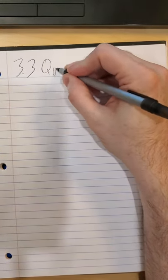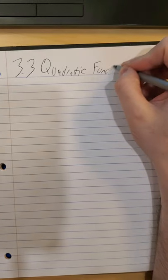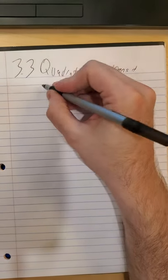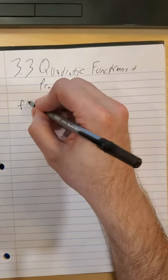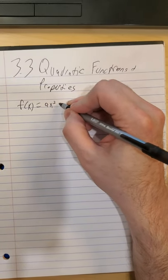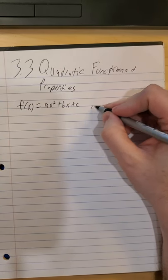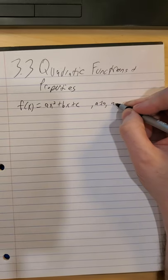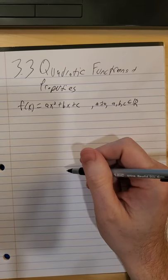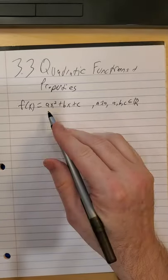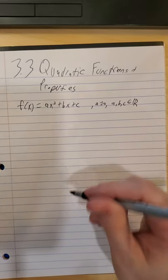Hello and welcome back. In 3.3 we get into quadratic functions and their properties. So first a basic setup for what a generic quadratic would look like: f(x) = ax² + bx + c. So a is non-zero, a, b, and c are real numbers, a is non-zero. If a is zero this is then linear, ax² gets knocked out, so a has to be non-zero.